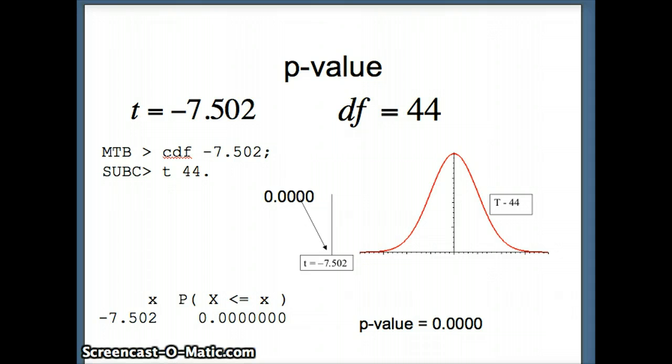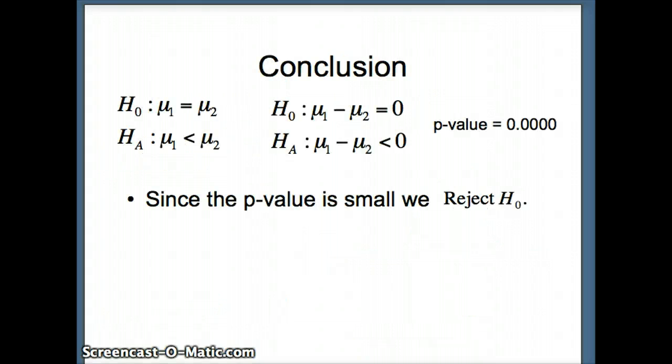Now what does that mean? That means assuming the null hypothesis is true, the probability of getting numbers this different from each other just by random chance is 0 to seven decimal places, which means chances are the null hypothesis was not true because something happening by random chance with that low of a probability is highly unlikely. Since the p-value is small, we reject H0 because there's a very small probability that, assuming this were true, we'd get numbers like the ones we have from our data sets to be that different from each other just by random chance.